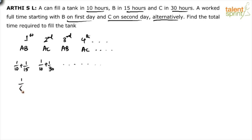5/30 simplifies to 1/6. For A and C: LCM is 30, so 3 + 1 = 4/30, which is 2/15. So the amount of work done on the first day is 1/6 and on the second day is 2/15.